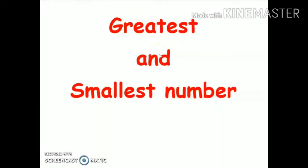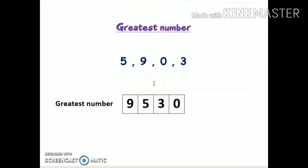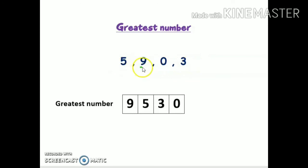Hi everyone, today's topic is forming the greatest and smallest number. We are going to take numbers up to nine thousand nine hundred ninety-nine. Suppose we are given four numbers: five, nine, zero, and three. We have to form the greatest number from these four numbers. First, we have to see which is the greatest number from all four — nine is the greatest number, so we will write nine.